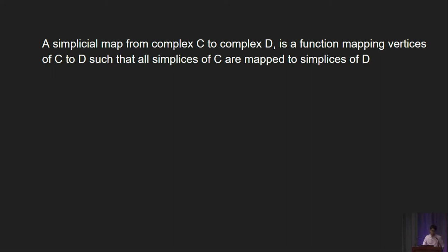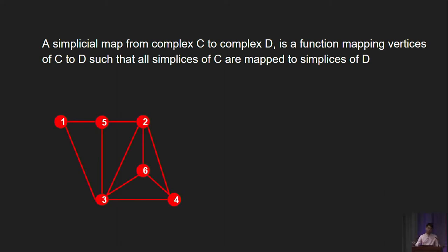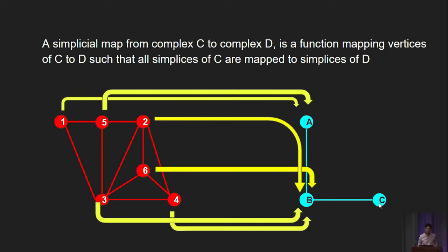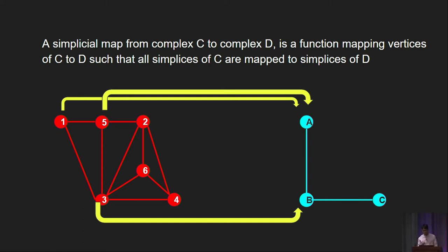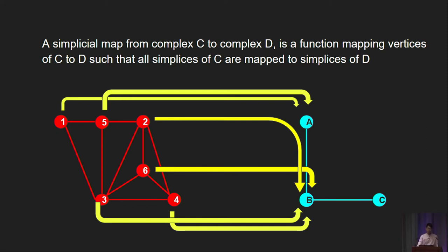The second operation you need to know is something called a simplicial map. A simplicial map from one complex to another, say complex C to D, is a function mapping vertices from C to D such that all simplexes of C are also mapped to simplexes of D. As an example, let's consider complex C as the previous subdivided complex and complex D as a simple complex of two simplexes, AB and BC. One possible simplicial map might look like this: we're mapping vertices of the left complex to vertices on the right complex. To see why simplexes are preserved, consider simplex {1,5,3} on the left — 1 is mapped to A, 5 is mapped to A, and 3 to B, so {1,5,3} is indeed mapped to simplex AB on the right. If you do some diagram chasing, you can verify this holds for every simplex on the left.